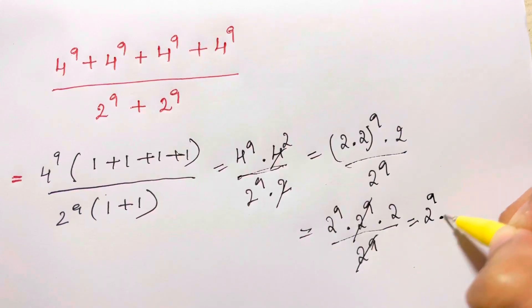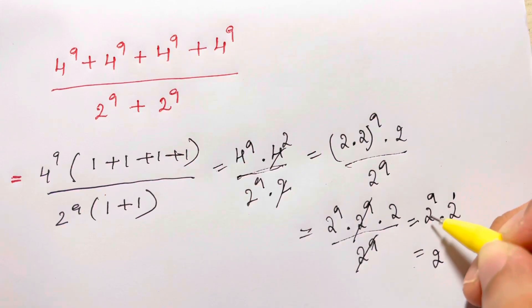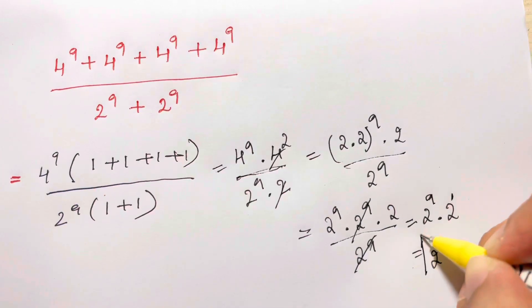Which is equal to 2 to the power of, here it's 1. When you have same base and multiplication, you add the powers. 2 to the power of 10, and that's your answer.